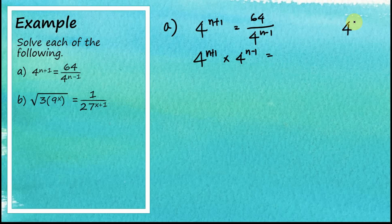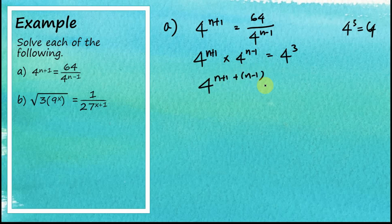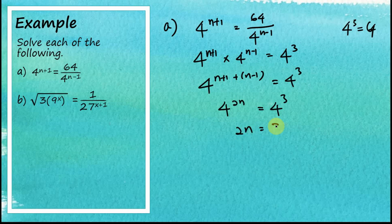We know 4 cubed equals 64. Since the bases are the same, we combine the indices: n plus 1 plus n minus 1 equals 3. Positive 1 plus negative 1 becomes 0, so 2n equals 3 and n equals three over two, or one and a half.